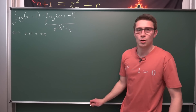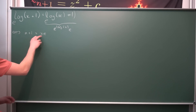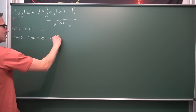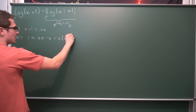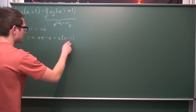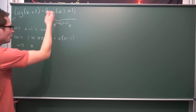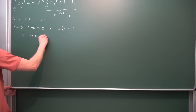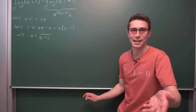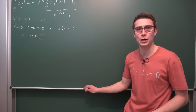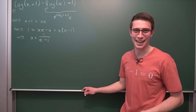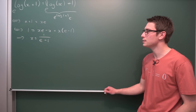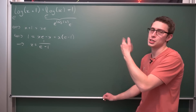Now we can simply solve for x. We subtract x on both sides, giving us that 1 is equal to x times e minus x. x is a common factor — factoring it out gives us x times (e minus 1). And now to solve for x, we divide both sides by e minus 1, giving us overall that the solution is x is equal to 1 over e minus 1. We can divide by e minus 1 because e is approximately 2.718, so e minus 1 is not equal to 0. So this right here is the solution to our equation.